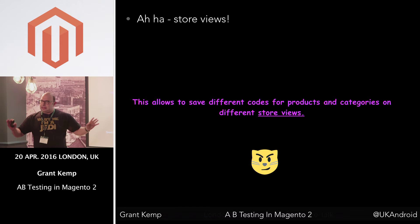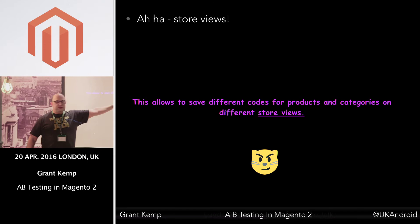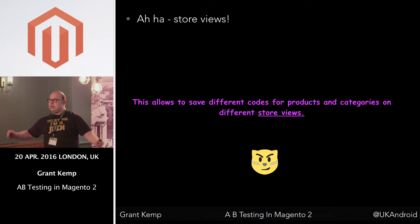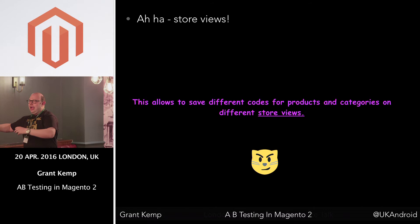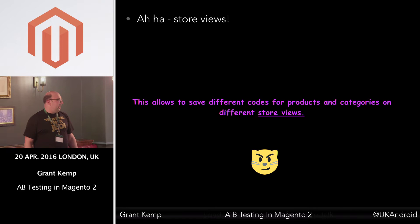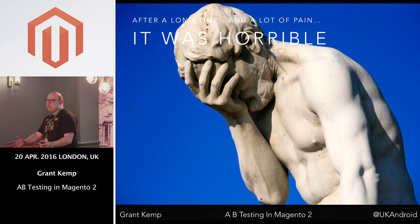This is the bit where I thought, 'Oh, hold on, this is new information.' The README says: 'This allows you to save different codes for products, categories, on different store views.' We've cracked it — we need to create new store views in order to do tests. Somehow the magic in Google Analytics Experiments will tell Magento which store view to use. Though I was thinking, that's really horrible — it's a lot of work to create new store views every time. Anyway, needless to say, it didn't work.